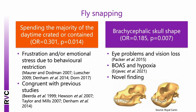Spending the majority of the daytime crated was also a significant risk factor for fly snapping. Having a brachycephalic skull shape was a novel significant risk factor for fly snapping — brachycephalic dogs are predisposed to serious health disorders including eye disorders and breathing impairment. They are 20 times more likely to suffer from corneal ulceration than non-brachycephalic breeds, which can cause scarring and visual impairment. Visual impairment in humans can cause complex hallucinations, so brachycephalic dogs may experience similar hallucinations from progressive corneal damage leading to visually mediated ARBs such as fly snapping — though dogs cannot self-report hallucinations.